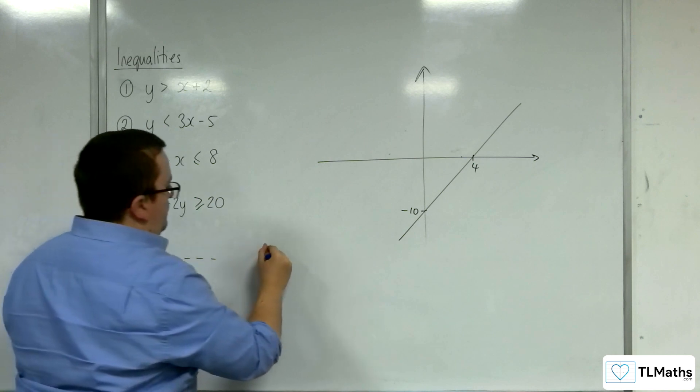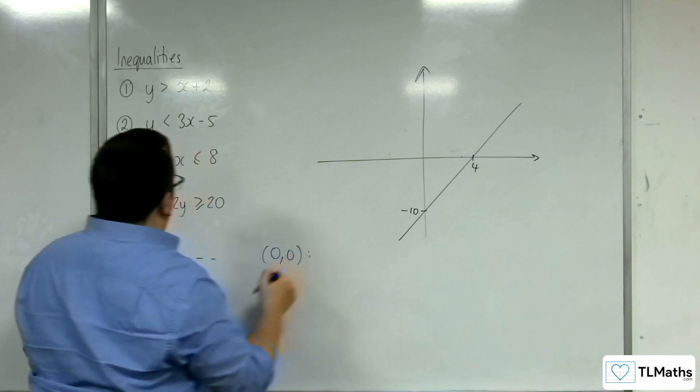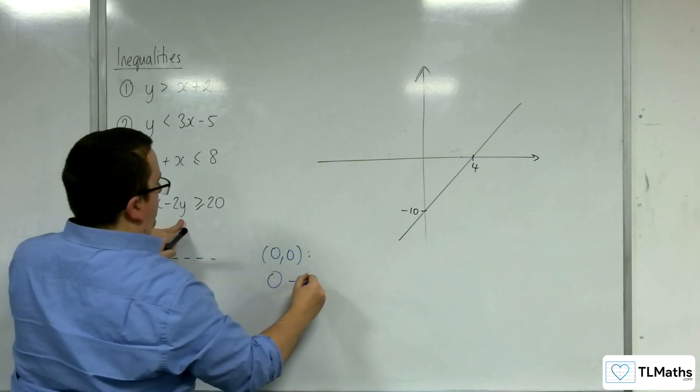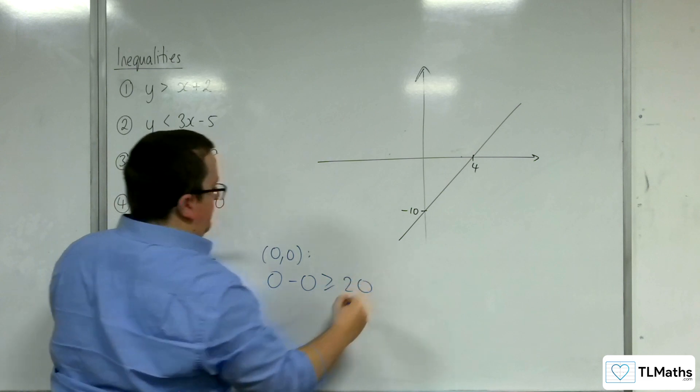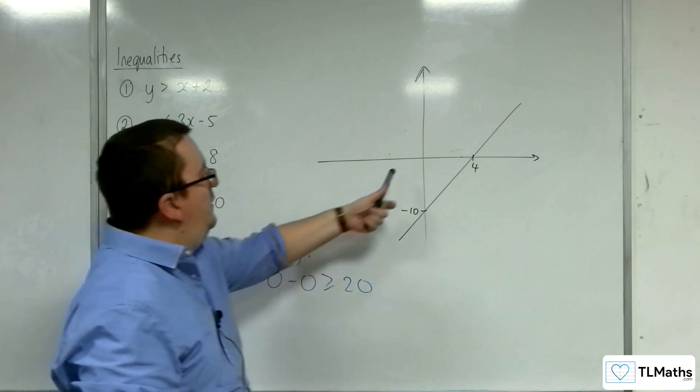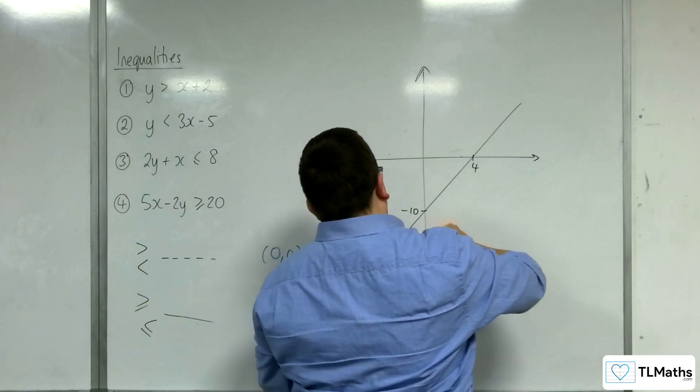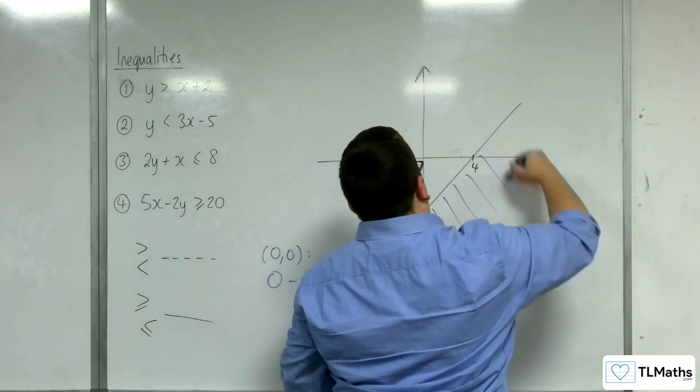Let's try 0,0. So, we get 0, take 0, is greater than or equal to 20. Well, that's clearly going to be false, isn't it? So, that's not in the region I want. So, actually, I want that region there.